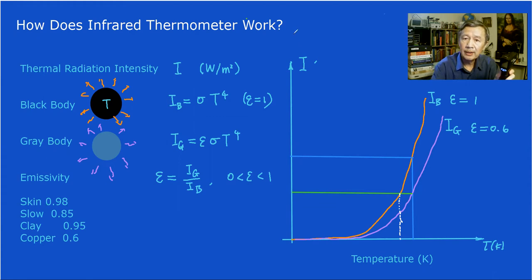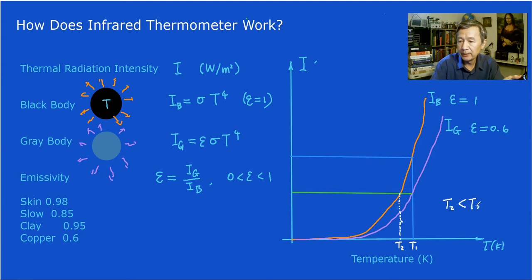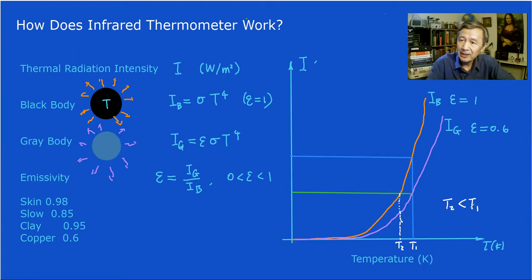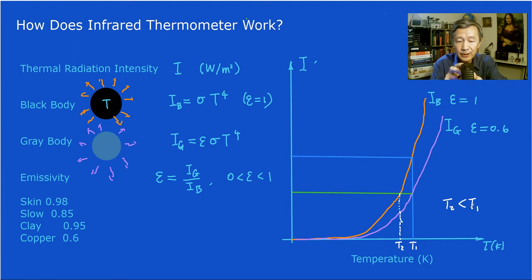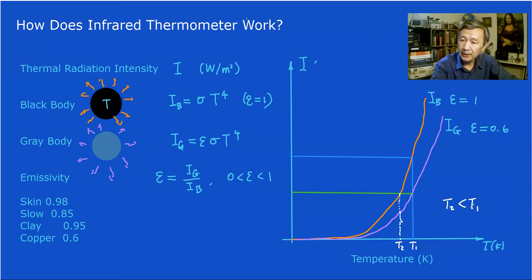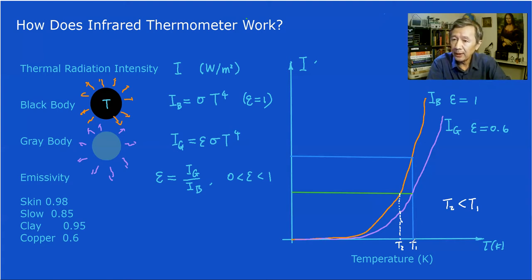If this is the actual temperature T1 and this is the displayed temperature T2, then T2 is lower than T1. That is the problem. If you go to the market and buy an IR thermometer, check whether you can adjust or reset the emissivity. If you cannot, you will always have this trouble — you will obtain readings that are lower than the actual temperature the object has.